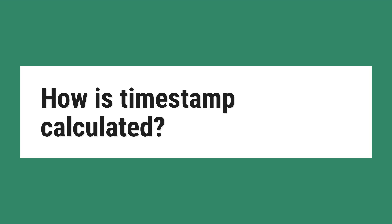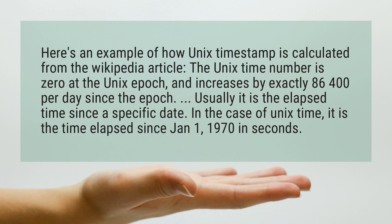How is timestamp calculated? Here's an example of how Unix timestamp is calculated from the Wikipedia article. The Unix time number is zero at the Unix epoch and increases by exactly 86,400 per day since the epoch.